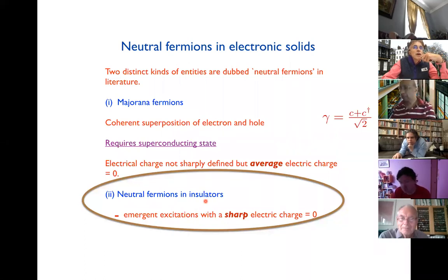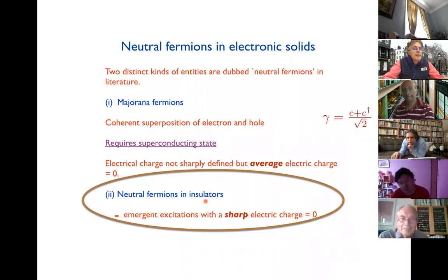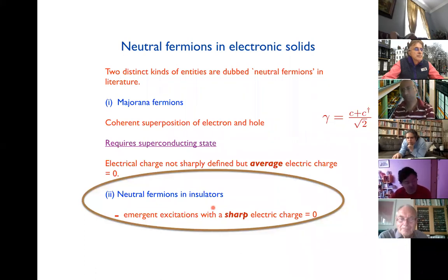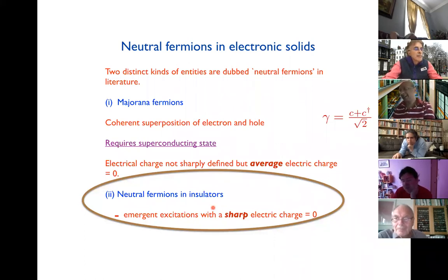Question from Masaru: In the second example of neutral fermions, do you assume there is no global U(1) invariance, or do you still have U(1) invariance even though they are charge neutral? Answer: It's an insulator, so it preserves the global U(1) symmetry associated with charge conservation. The neutral fermion field representation — whether complex or real — will be apparent in a few slides. Please wait and the answer will become clear shortly.